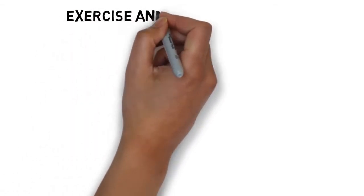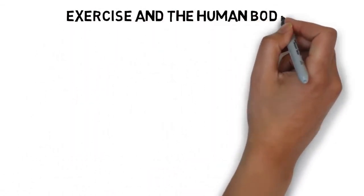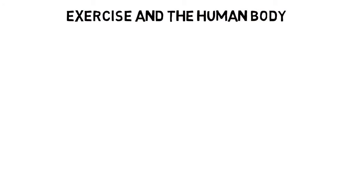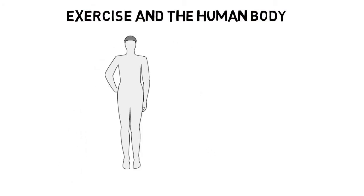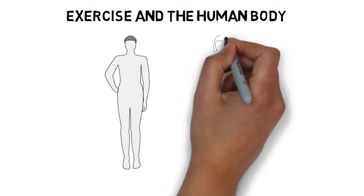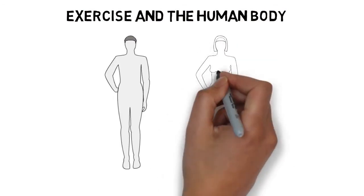Exercise and the human body. Exercise involves all of the different systems within the human body. If any of these systems are not performing at their full potential, then it affects the way the body works and performs.